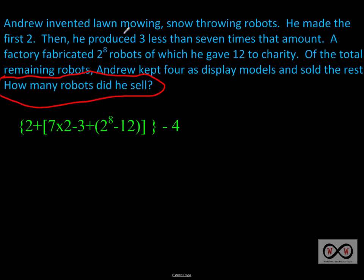So now, how did we come up with this expression? Well, you can take all of these words in this wordy word problem and really simplify it by using numbers and operation symbols and parentheses, brackets, and braces. First of all, we know that Andrew invented lawn mowing, snow throwing robots, and he made at first two of them. You can see that right there. Two robots is what he made first. Then, he produced three less than seven times that amount. So we're thinking three less than seven times that amount. The original amount was two.